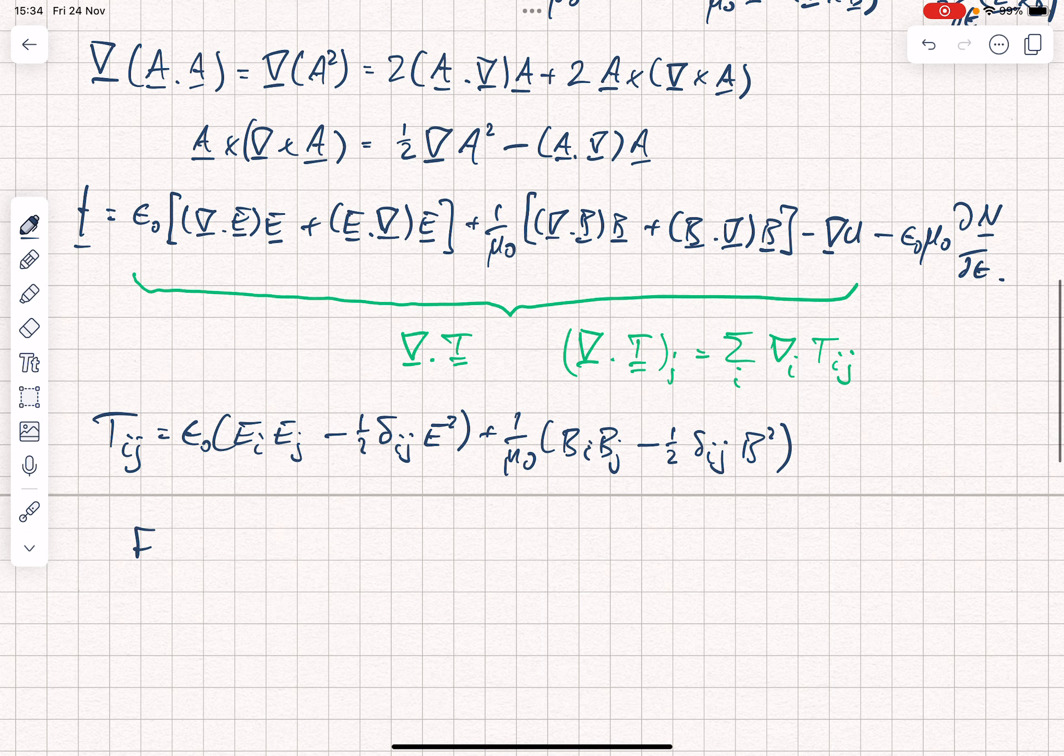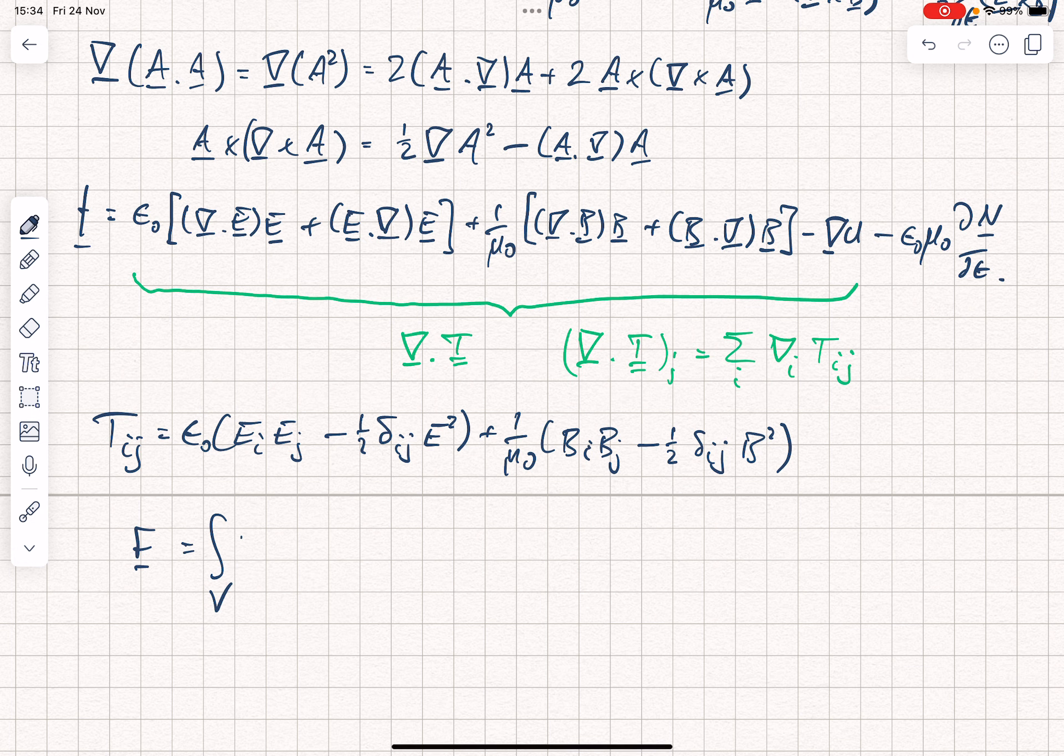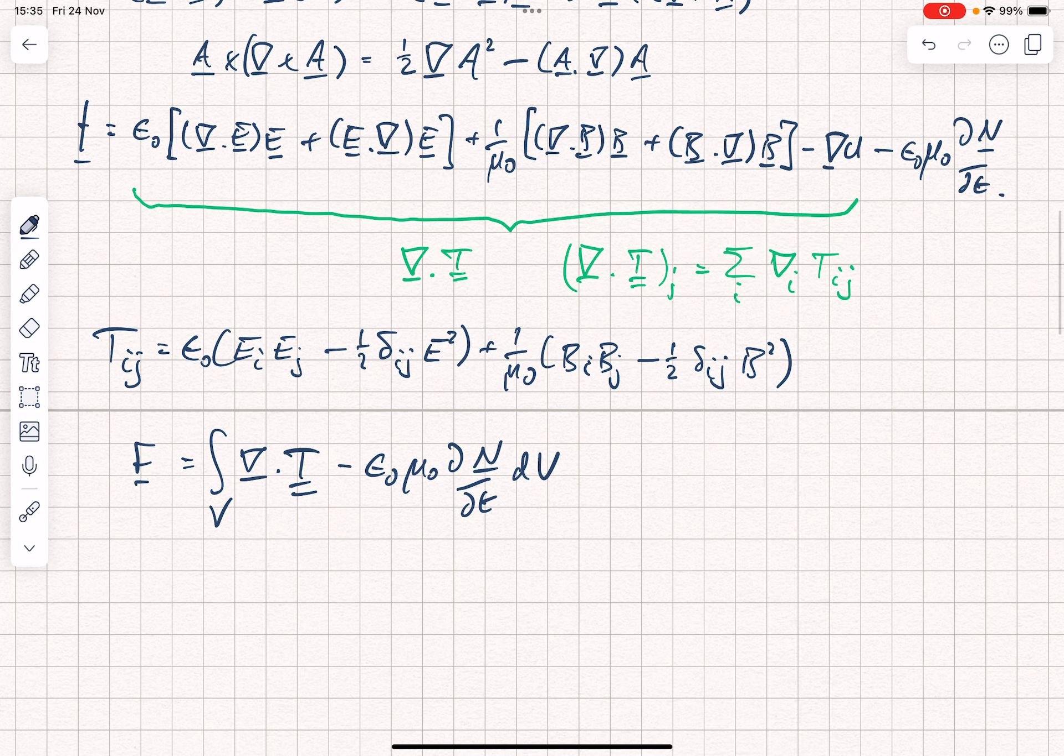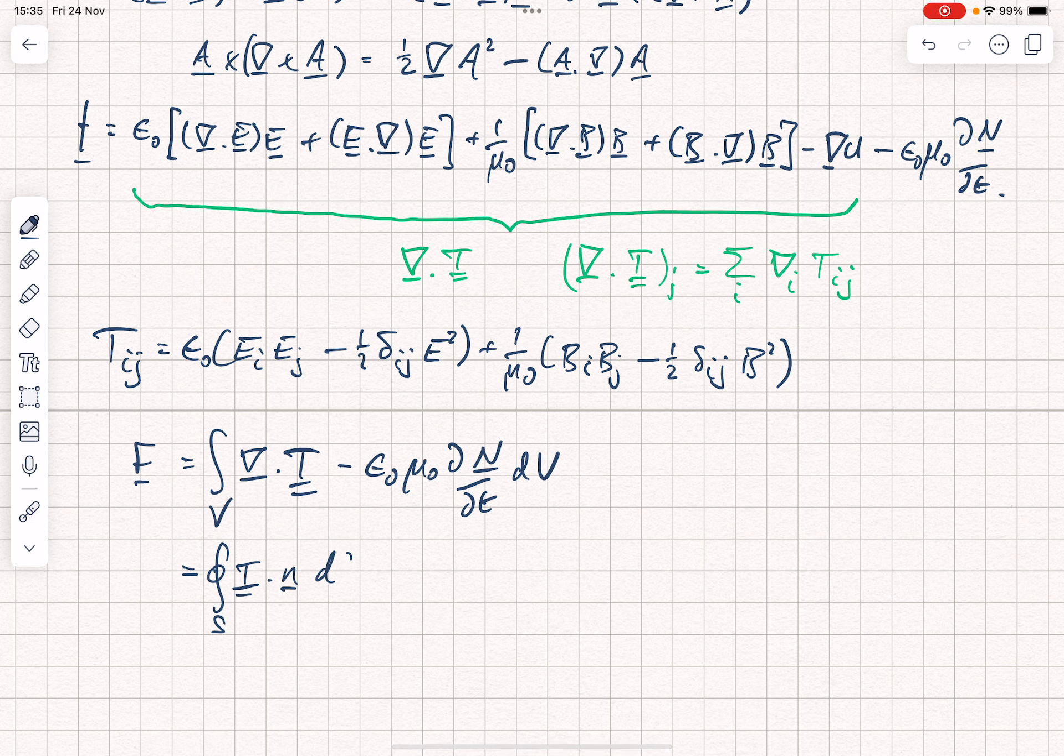So now we can write the total force F is equal to the volume integral of divergence of t minus epsilon 0 mu 0 dN by dt dV, and notice again that we've got here the divergence of something added to a time derivative. These kinds of ideas keep cropping up. We can use, of course, the divergence theorem on that first term, and write that as the closed surface integral of t dotted with N dS, and I've used N there to emphasize that that's the normal to the surface, minus the volume integral of epsilon 0 mu 0 dN by dt dV.